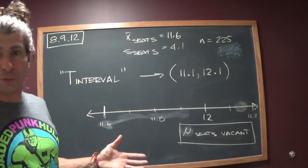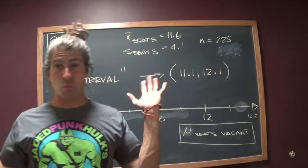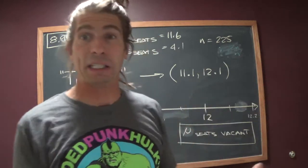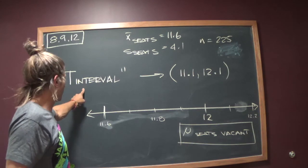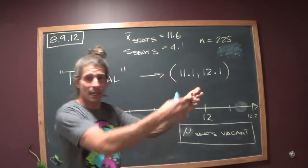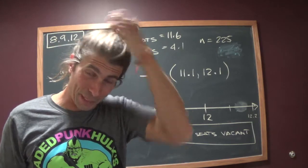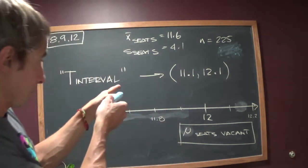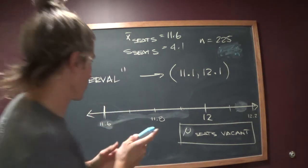The textbook will argue that you can use the z distribution because it's above a sample of 30. I say, why not just use the t? It basically looks like the z anyway. So, we're going to go with the t distribution. I ran the t interval and I got this. Let me back up again.